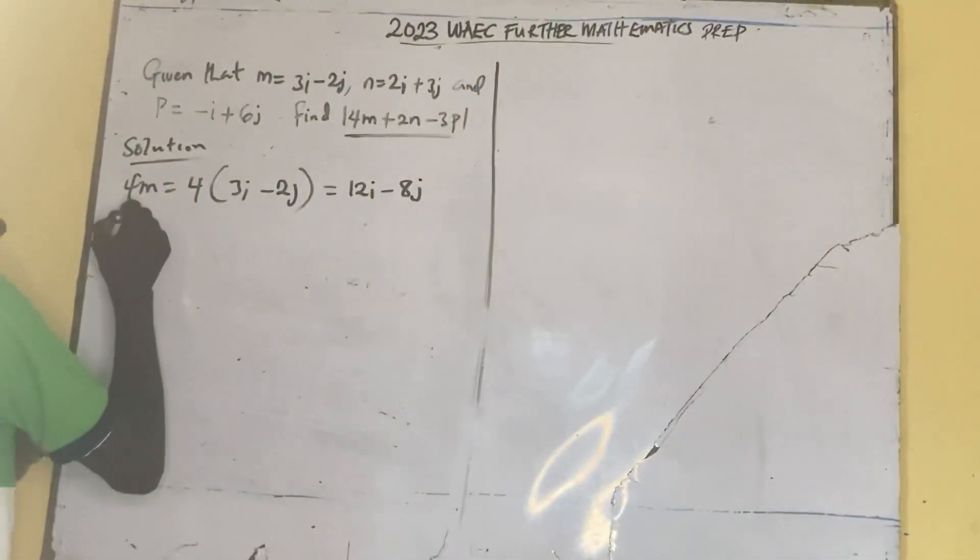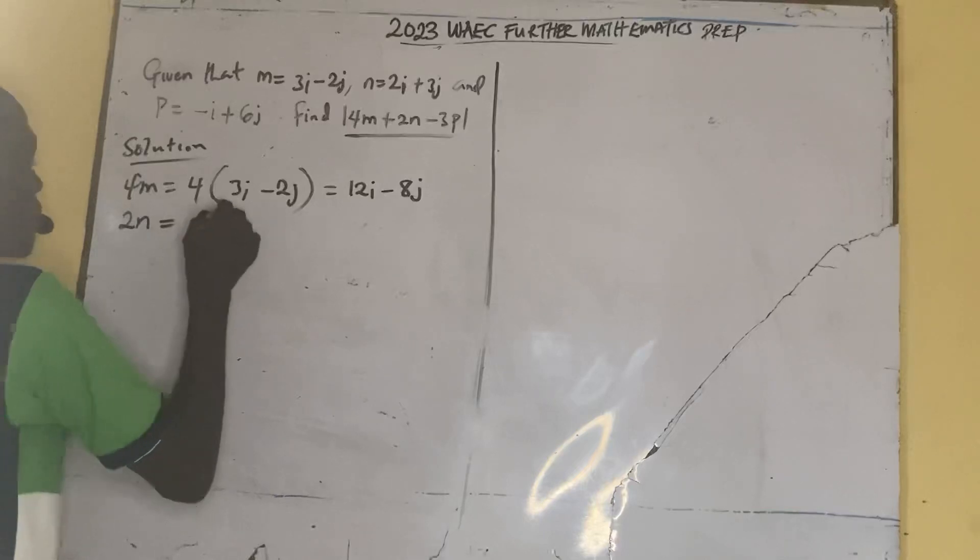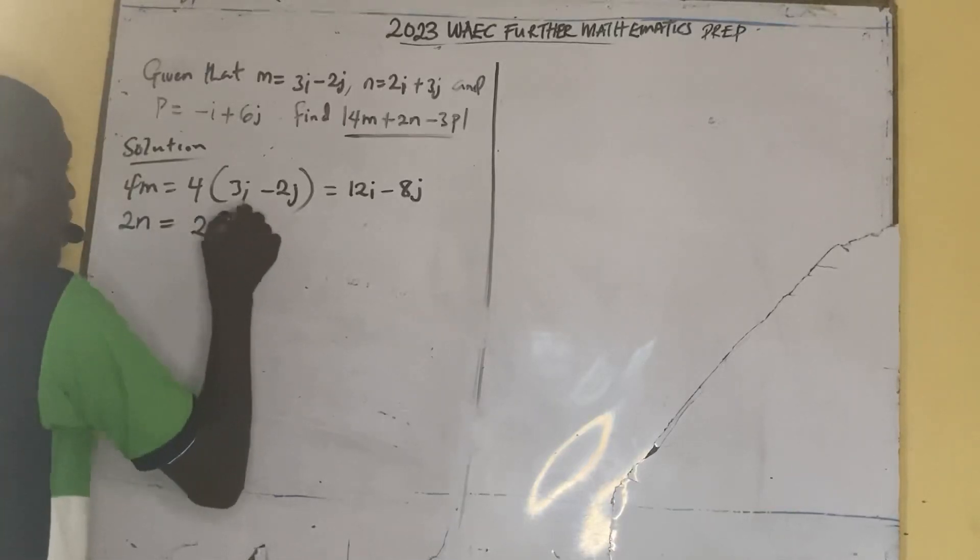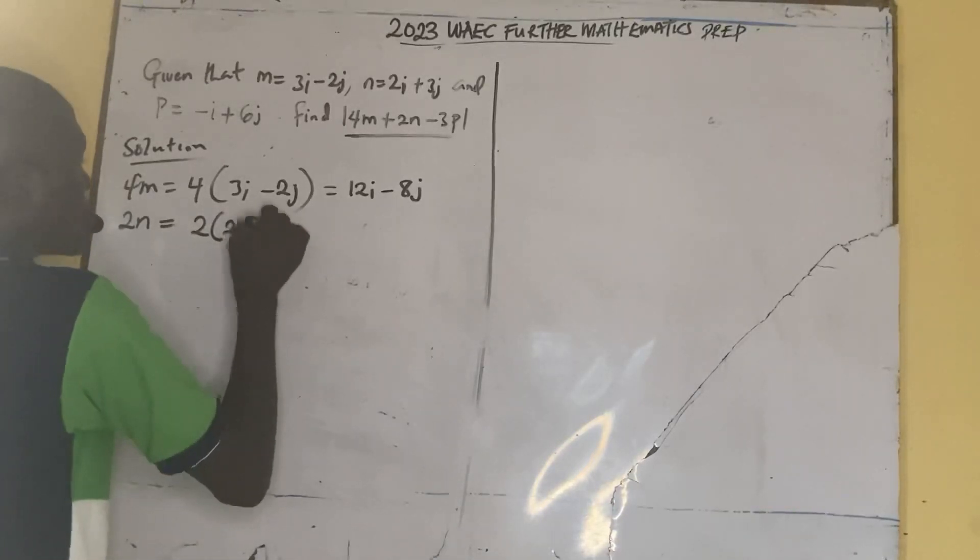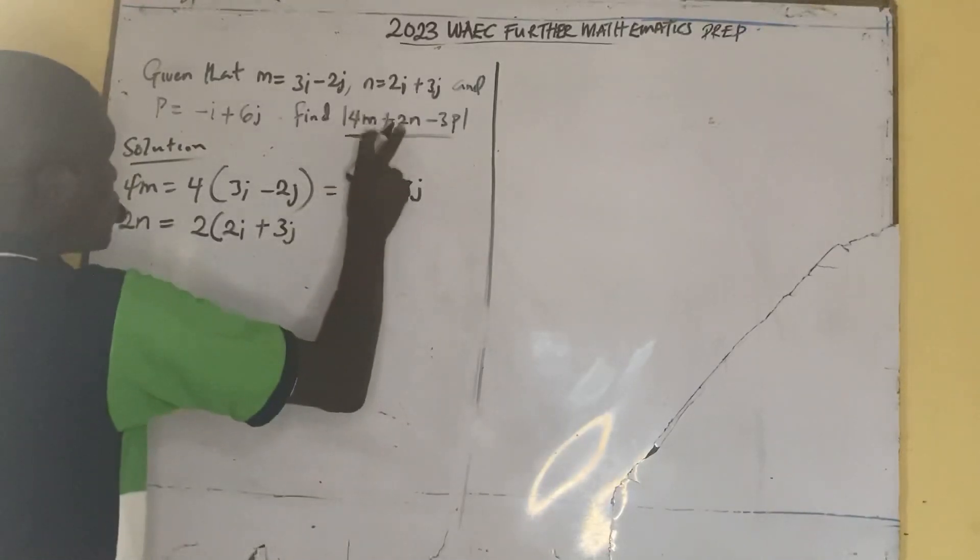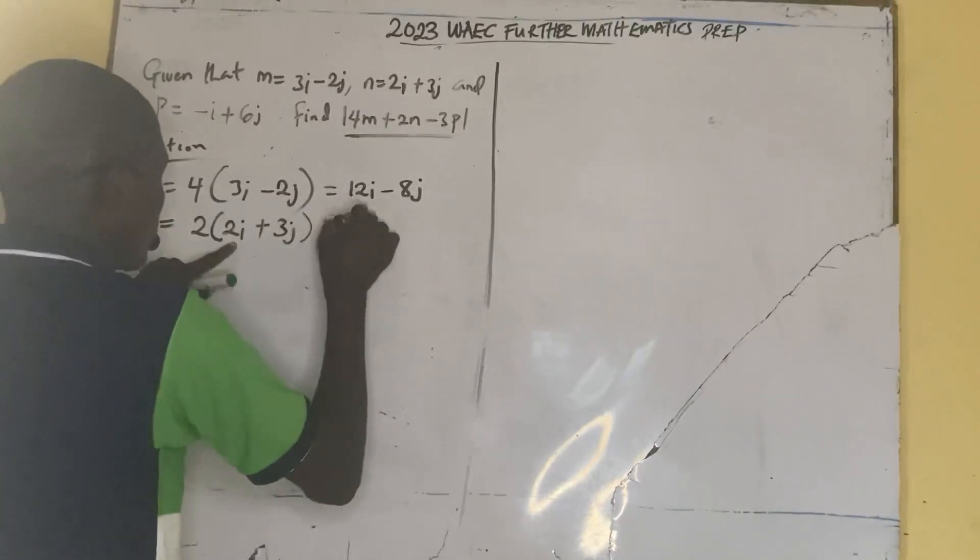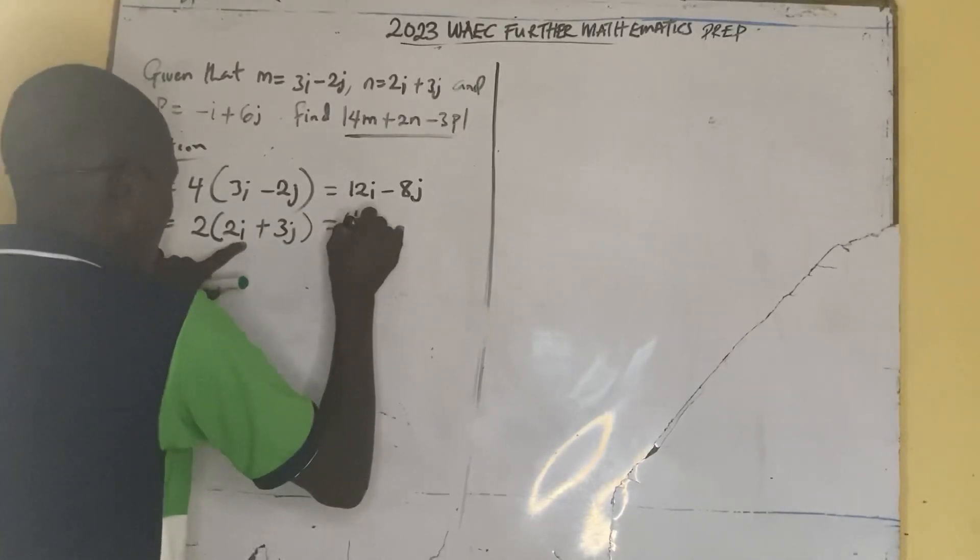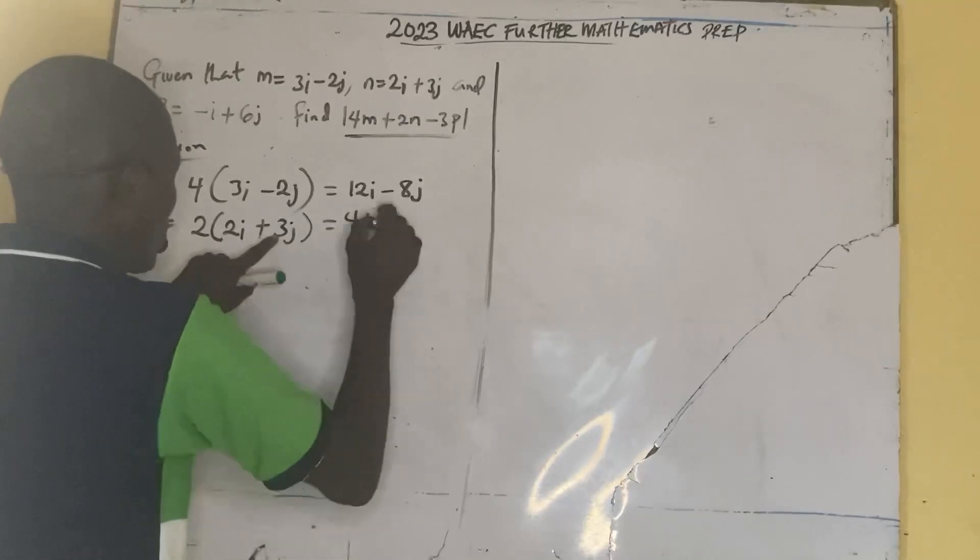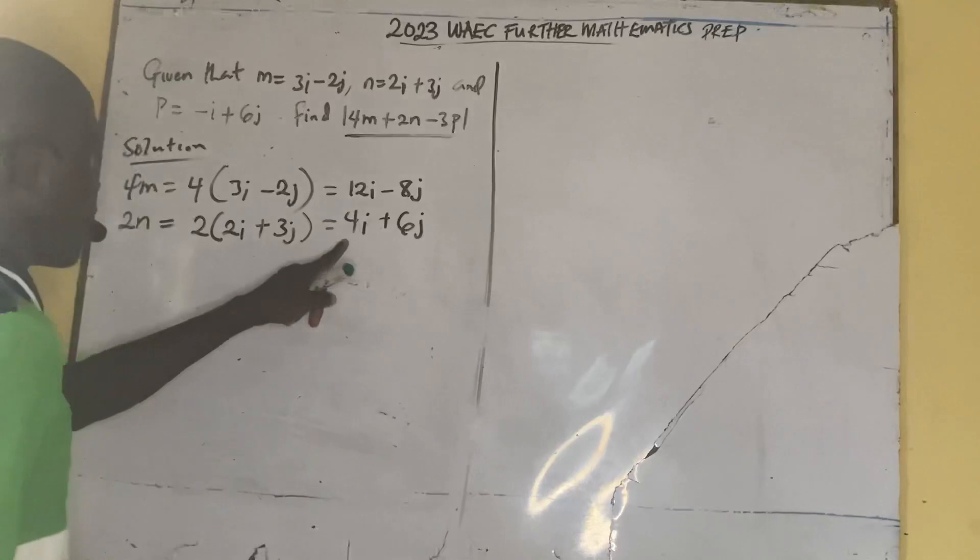So that is done. Then 2n equal to 2 into bracket 2i plus 3j. So 2n equal to 2i plus 3j which is equal to 2 times 2 is 4i, 2 times 3 would be plus 6j. 4i plus 6j.